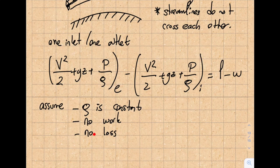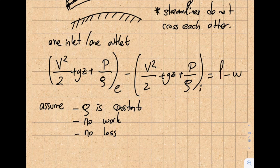Let's talk about the no-loss assumption first. When I say no loss — if you think about real-life applications, like driving a car from school to home and expecting the same amount of gas — that's not realistic. So please note that we are assuming loss to be zero. The no-work assumption also depends on the problem; in a simple bend, there's no work input, so that's quite fine.